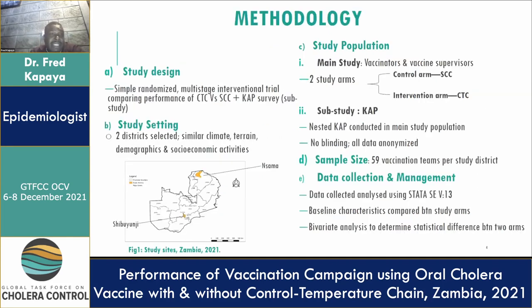Our methodology: the design was a simple randomized multi-stage interventional trial comparing CTC versus the standard cold chain, with a nested CAP survey as a sub-study. For the setting, we selected two districts with similar climate, terrain, demographics, and socioeconomic activities — as shown in the map, those are two districts in Zambia: one called Lusaka and the other called Shibuyunji.